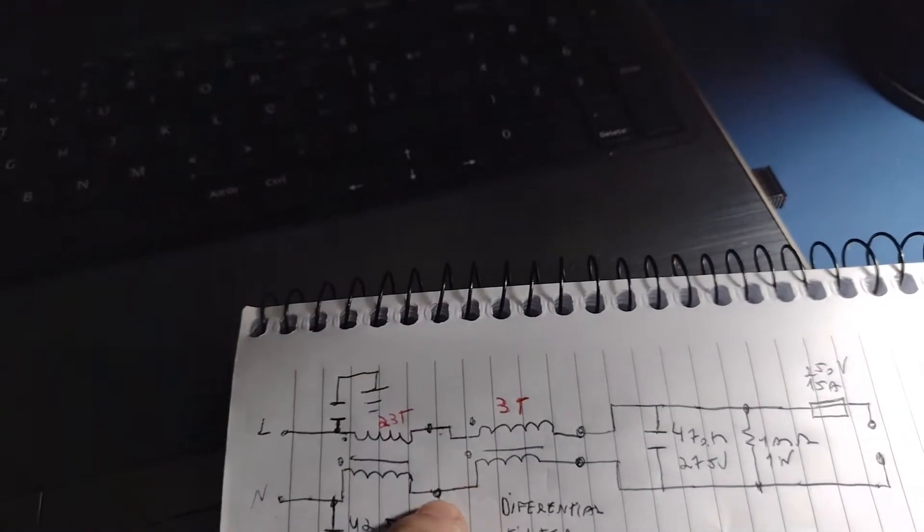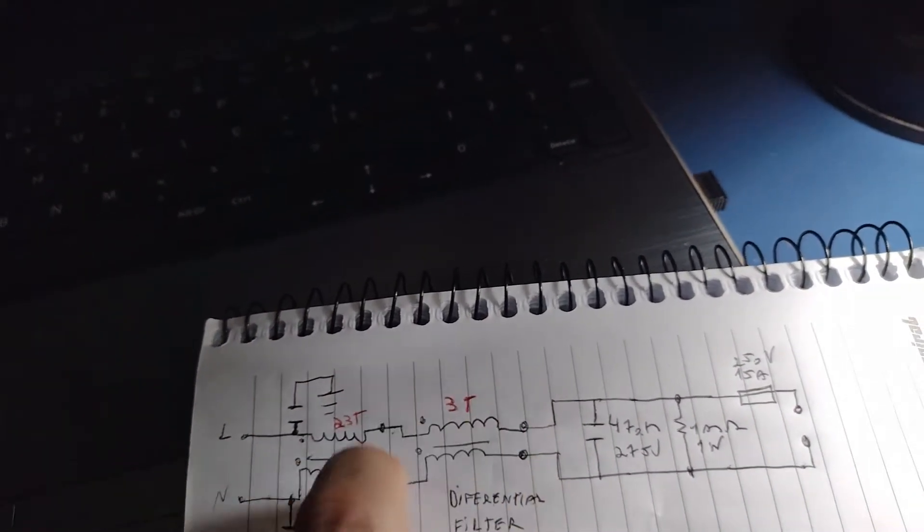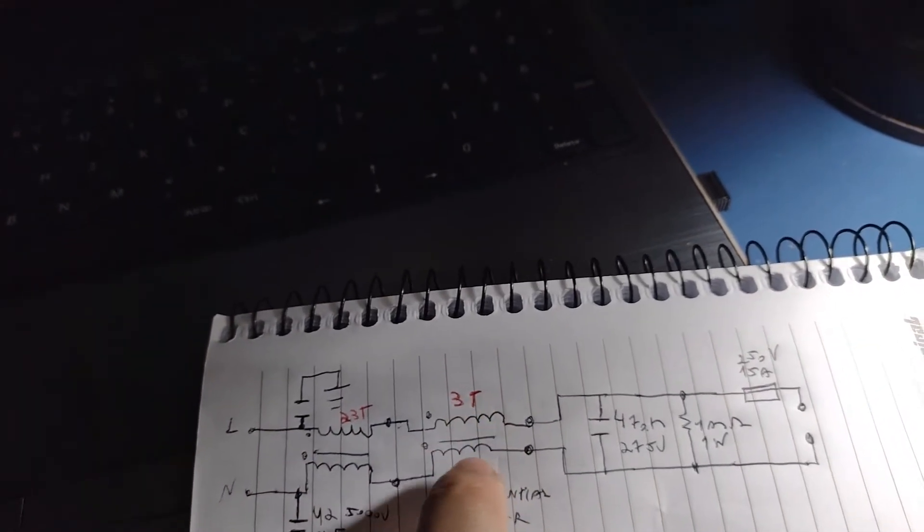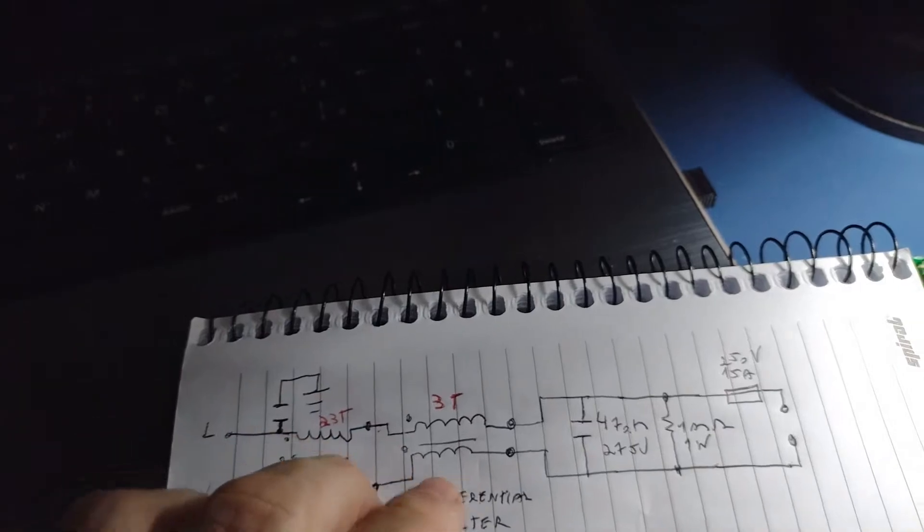The common mode filter is linked with a differential filter of three turns of wire and three turns of wire. And it is in parallel with a capacitor of 470 nano Farad.